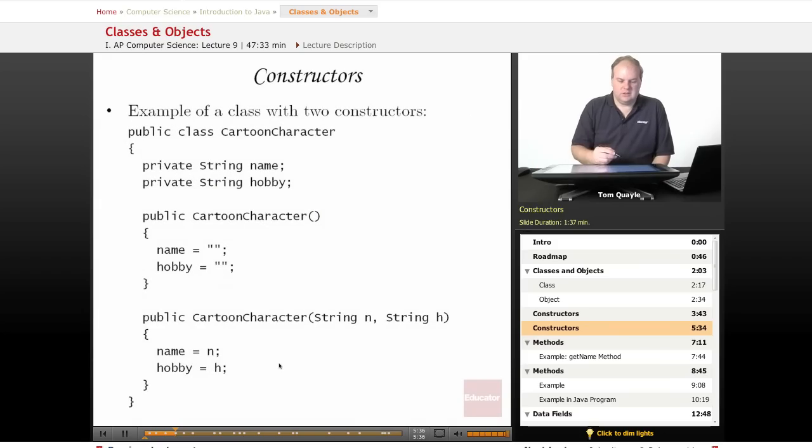Here's an example of a class that has two constructors. We have a class called CartoonCharacter. Here is one constructor, and this is a no-args constructor because there's nothing in the parentheses. And all it does is it sets the name variable to an empty string and it sets another variable called hobby also to an empty string.